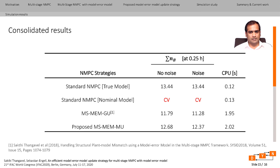The simulation results using different NMPC strategies along with their computational times are reported here. The nominal NMPC results in a constraint violation, whereas the new update strategy yields an 8% increase in the number of moles of product B produced compared to the update strategy from the initial work. There is a slight increase in computational time for the proposed scheme, due to solving an online optimization problem to compute the model error model, compared to the existing approach where the gain can be updated using simple matrix operations.